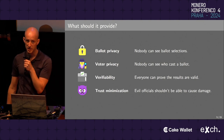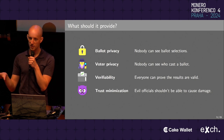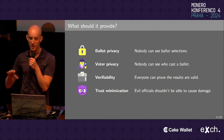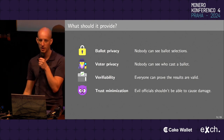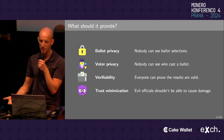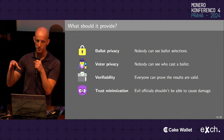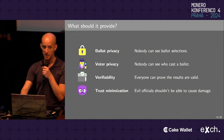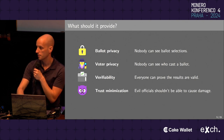Finally, we want trust minimization. If the officials — either tallyers or organizers — were to turn evil, or maybe they always were, they shouldn't be able to cause much damage. We want to minimize the so-called blast radius of what they can do, without having to put too much trust in those officials to act honestly.